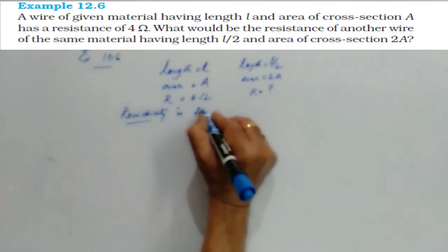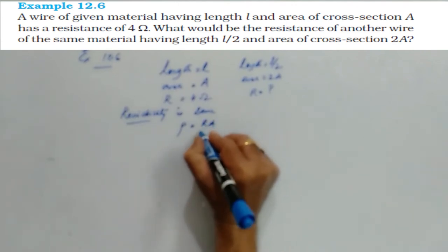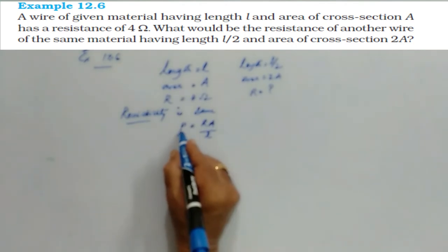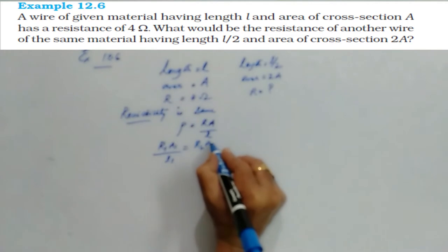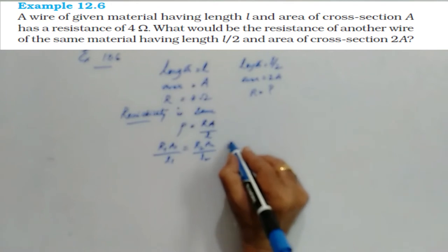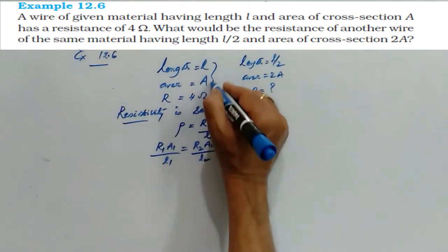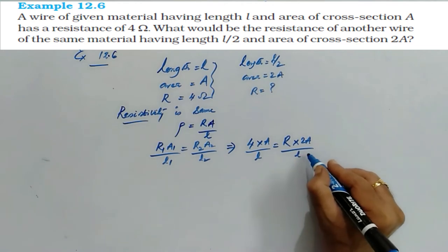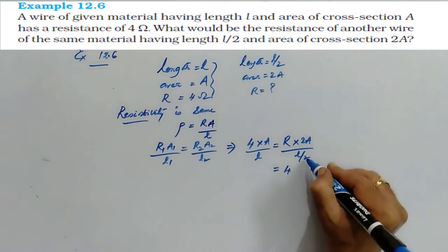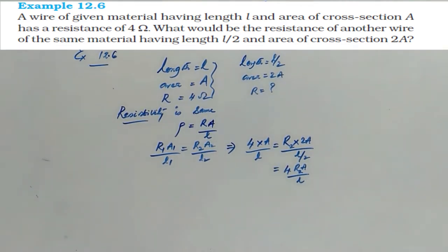So immediately you must understand, the material is same because the material is same. The formula for resistivity, R times A by L. Now, as resistivity is same, we can write R1 A1 by L1 is equal to R2 A2 by L2. Now we will substitute R1 4 ohm, A1 A, L1 L. These are the details. Is equal to R2 that we have to calculate, into area 2A by length L by 2.